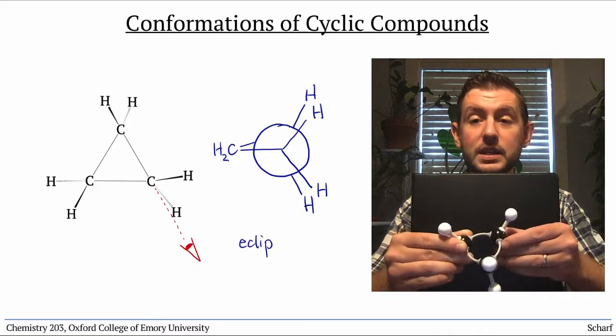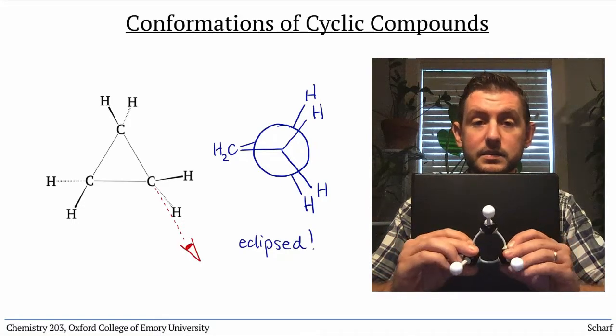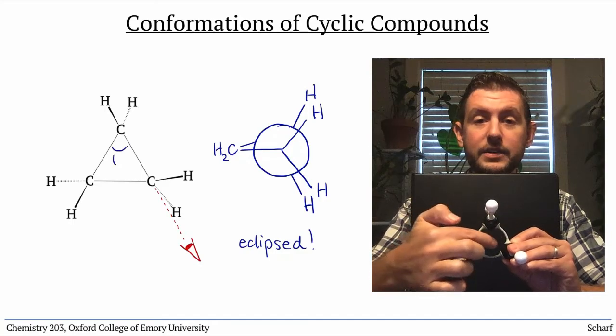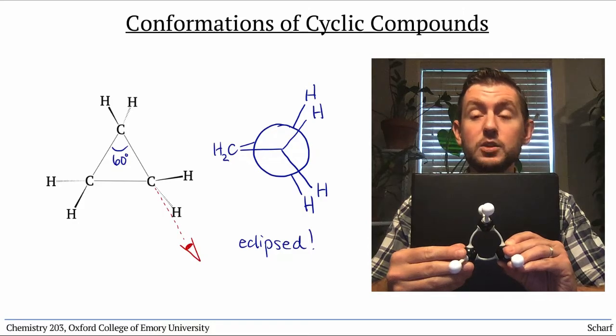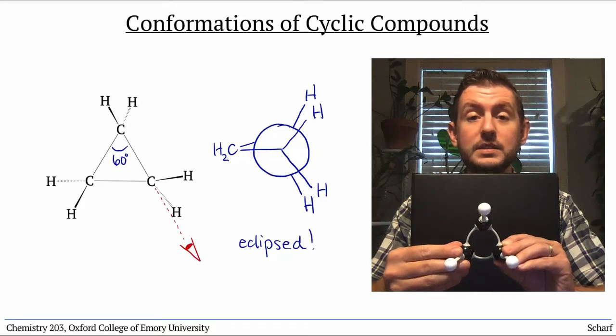In addition, cyclopropanes have 60 degree bond angles inside the ring. Neither of these situations is very happy, so cyclopropanes are relatively unstable.